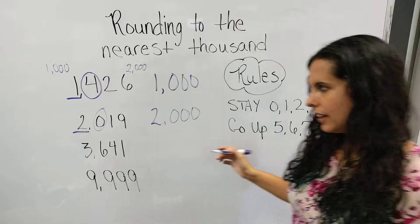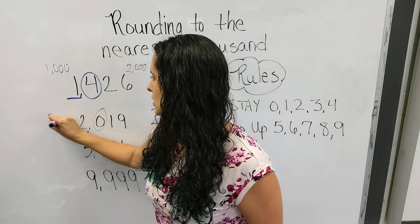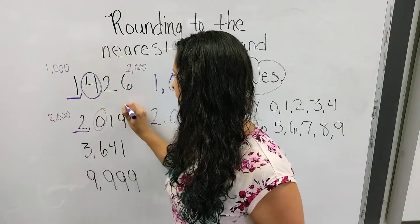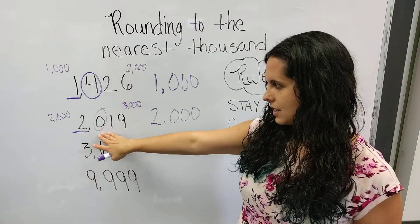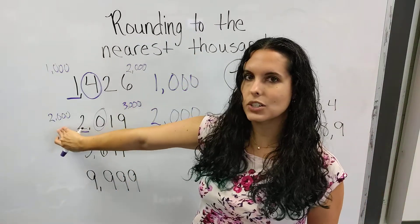On a number line, 2,019 is between 2,000 and 3,000, but because the 0 says stay, it's going to stay at 2,000.